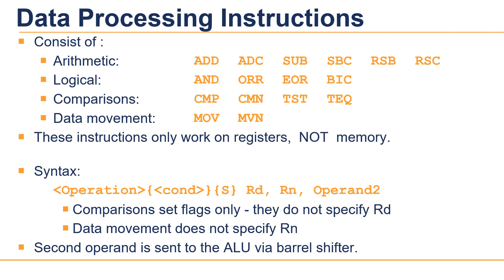The data processing instruction set covers arithmetic, logic, comparison, and data movement operations. The arithmetic data instructions have a lot of variation — for example, you can directly subtract or you can do a reverse subtract. These instructions only work on registers, not on memory, as discussed in the first tutorial. Please refer to the first tutorial if you don't remember.